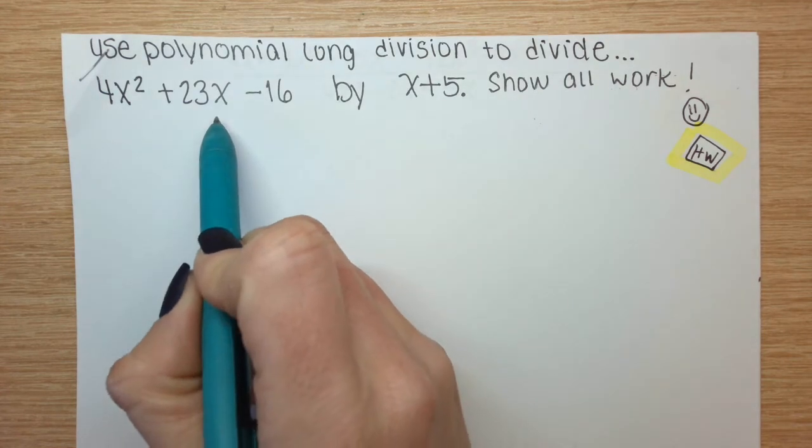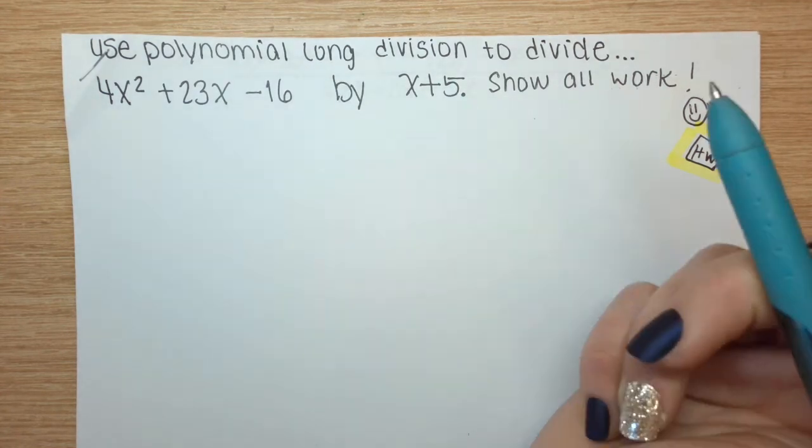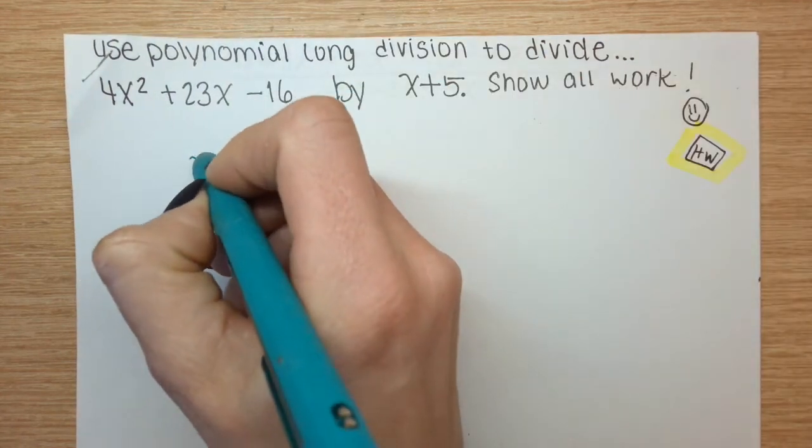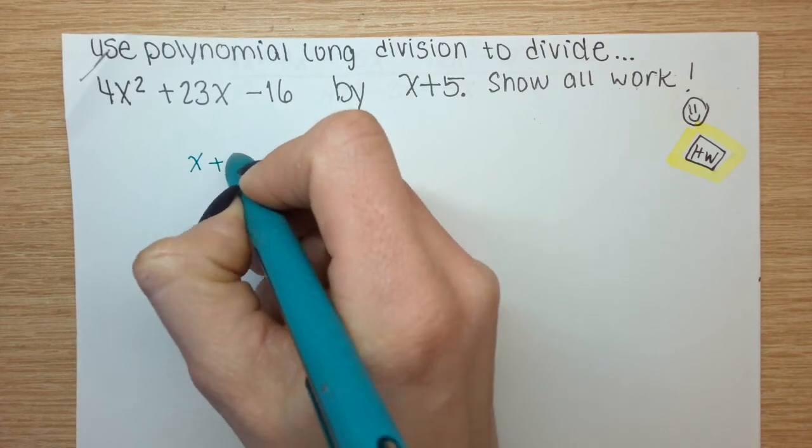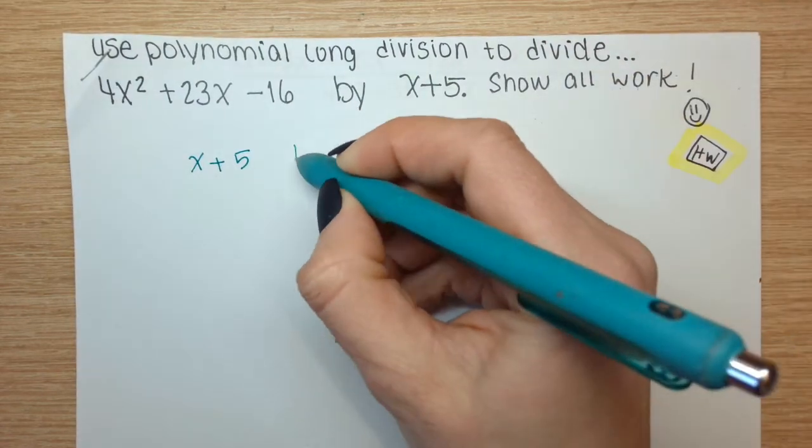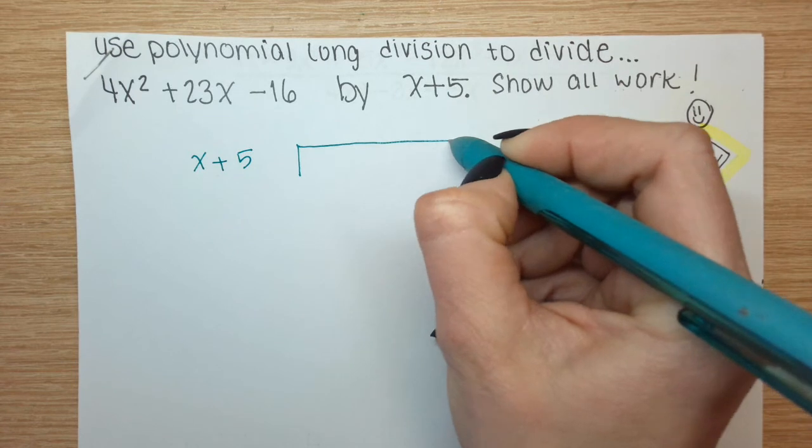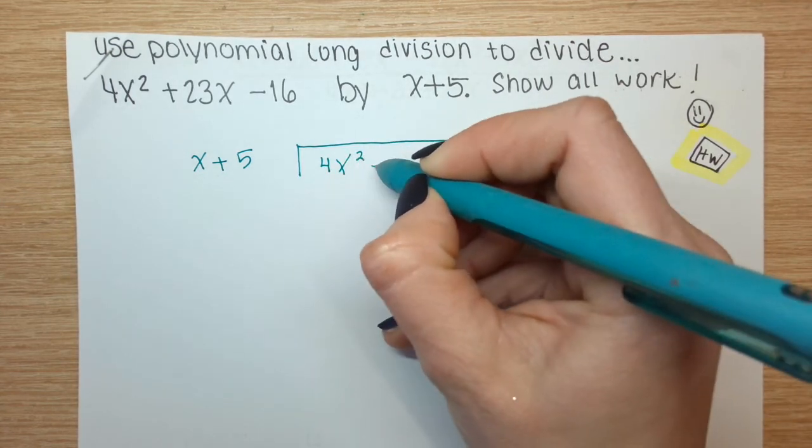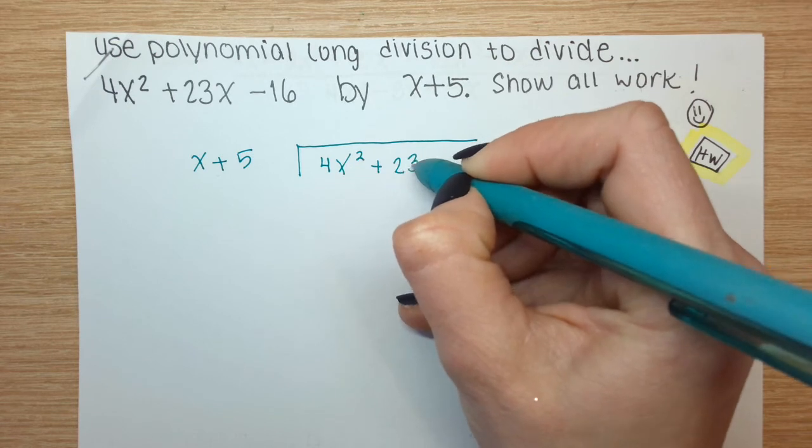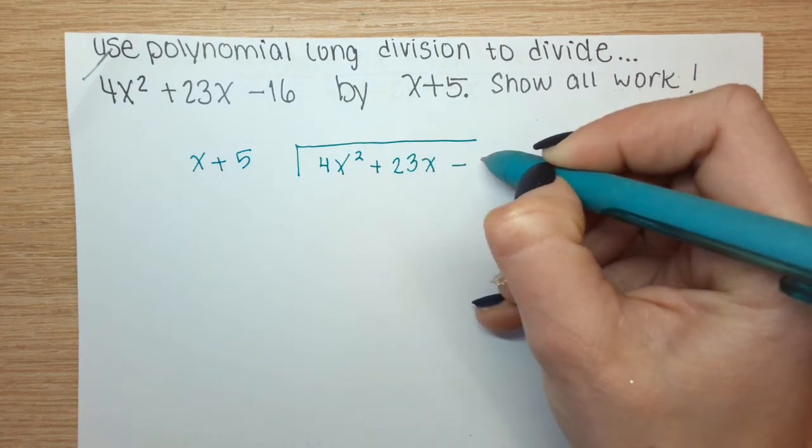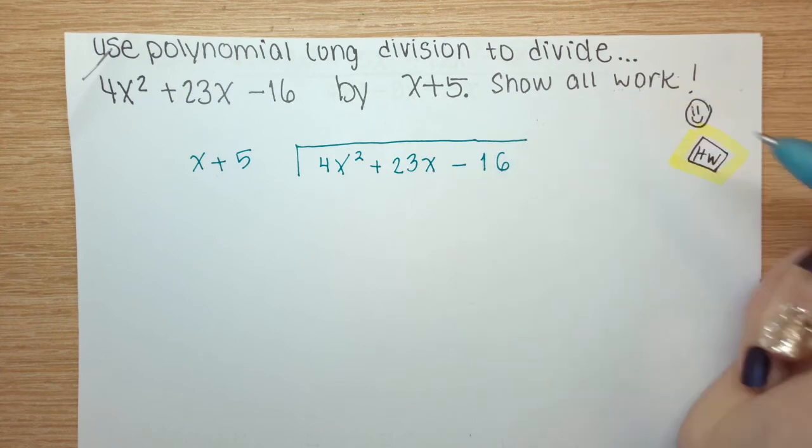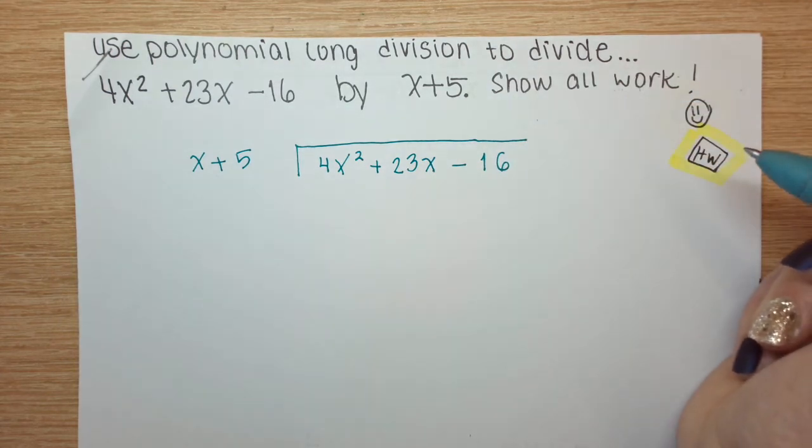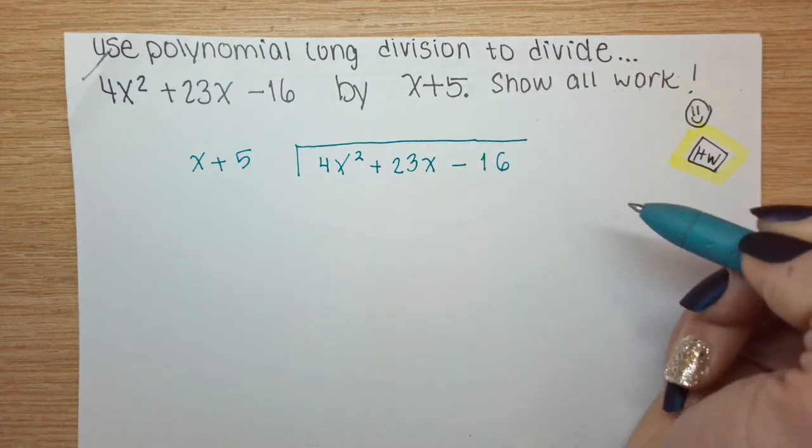Here, we're dividing a quadratic trinomial by a linear binomial. x plus 5 is our divisor, and 4x squared plus 23x minus 16 is our dividend.